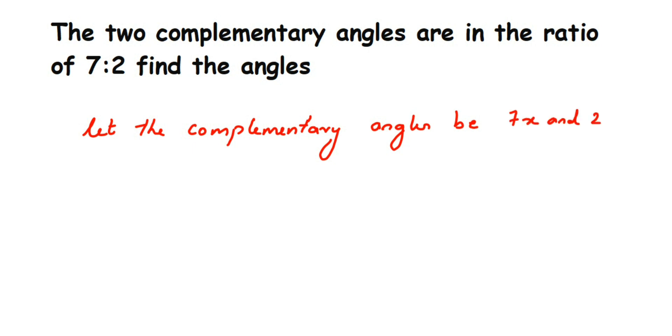Now like I said before, complementary angles - when you add these two angles the sum should be equal to 90 degrees. So here we have assumed the angles to be 7x and 2x, so if I add these two it should be equal to 90 degrees. So 7x plus 2x should be equal to 90 degrees.